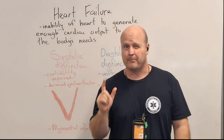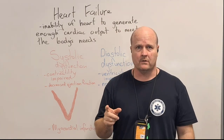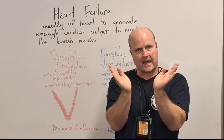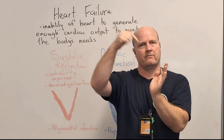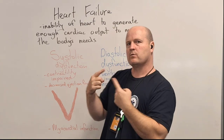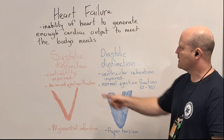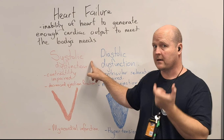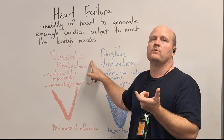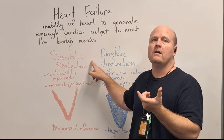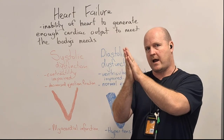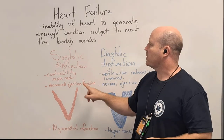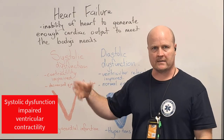The two things a pump has to do is contract and relax so it can fill up again. That's why we have two types of dysfunction. Systolic dysfunction — just like systolic blood pressure, which is the pressure on the walls of the artery when the ventricles contract — systolic dysfunction is when we have impairment in contractility.